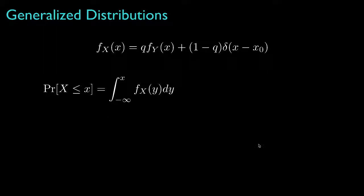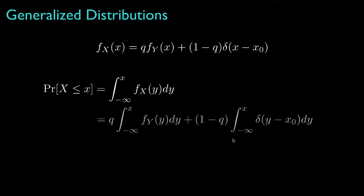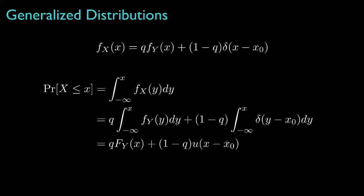Now, to find the cumulative distribution for this random variable, we'd carry out the associated integral and find that the result is a superposition of the cumulative distribution for the density y and a unit step function allocated at the point x0.